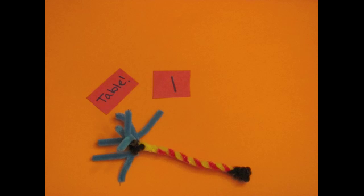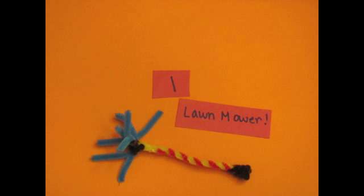You would have to have a mom neuron, a table neuron, a dog neuron, a cup neuron, a fish neuron, and even a lawnmower neuron.